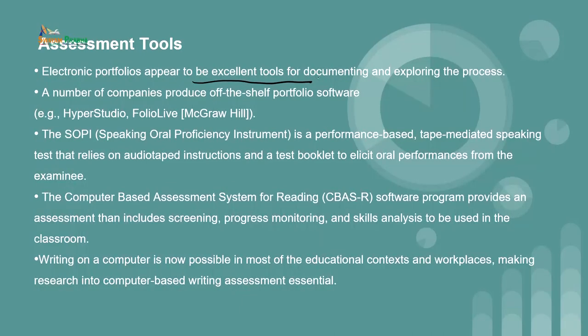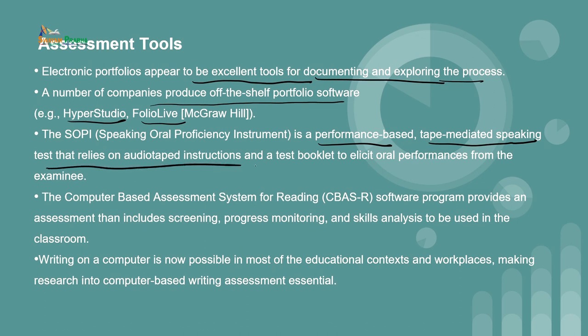Assessment tools are important when it comes to the implementation of CALL and ICT. Varieties include portfolios and self-assessment — these traditional methodologies and methods of assessment are upgraded in technological ways. Electronic portfolios appear to be excellent tools for documenting and exploring the process. A number of companies produce off-the-shelf portfolio software, such as Hyper Studio and Folio Live. SOPI is mainly used for speaking oral proficiency testing, and there is an upgraded version called COPI. These are performance based tape mediated speaking tests that rely on audio tape instructions and a test booklet to elicit oral performances from the examinee.